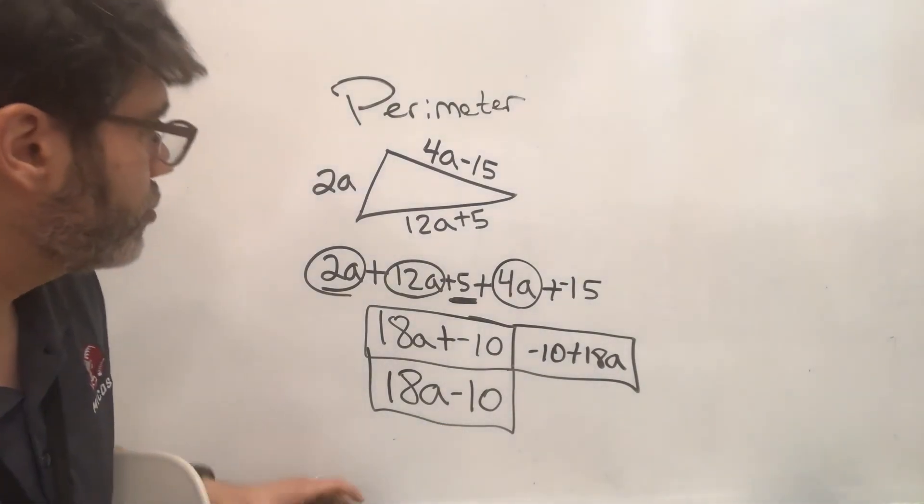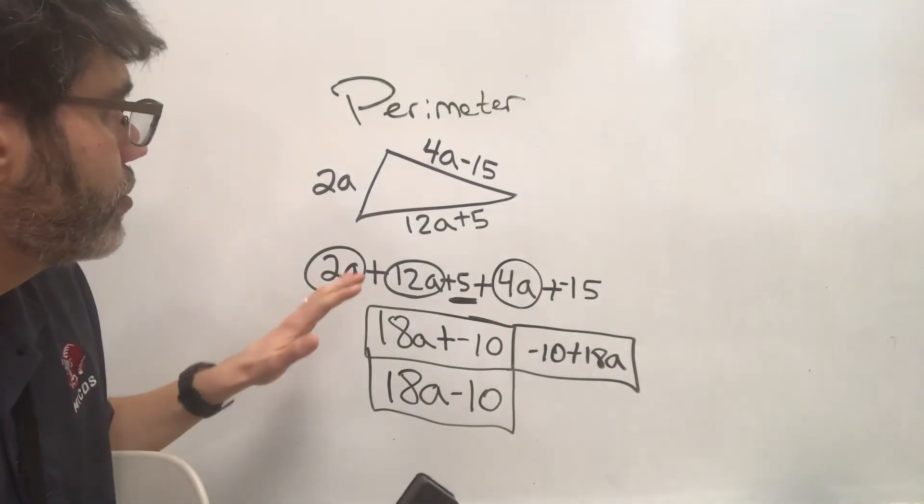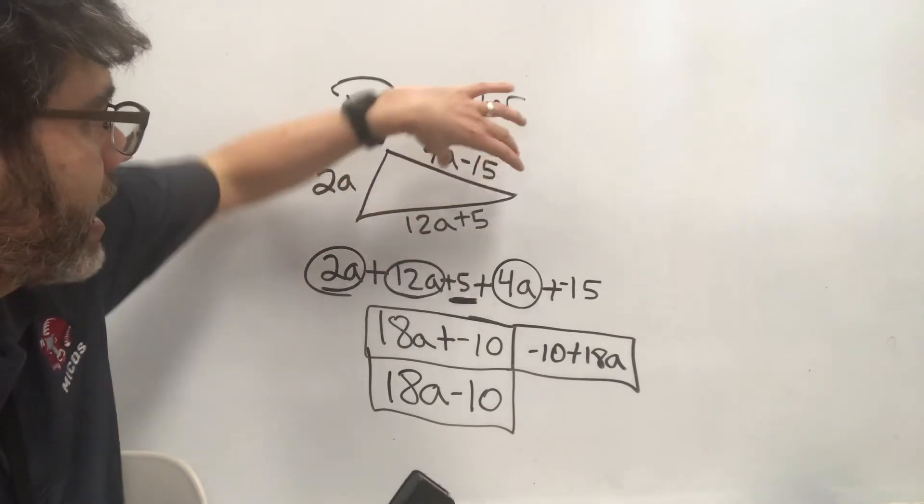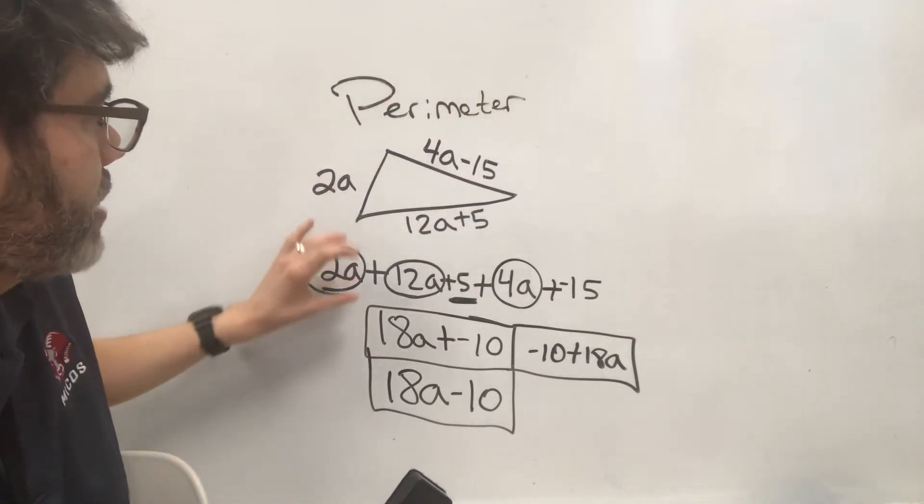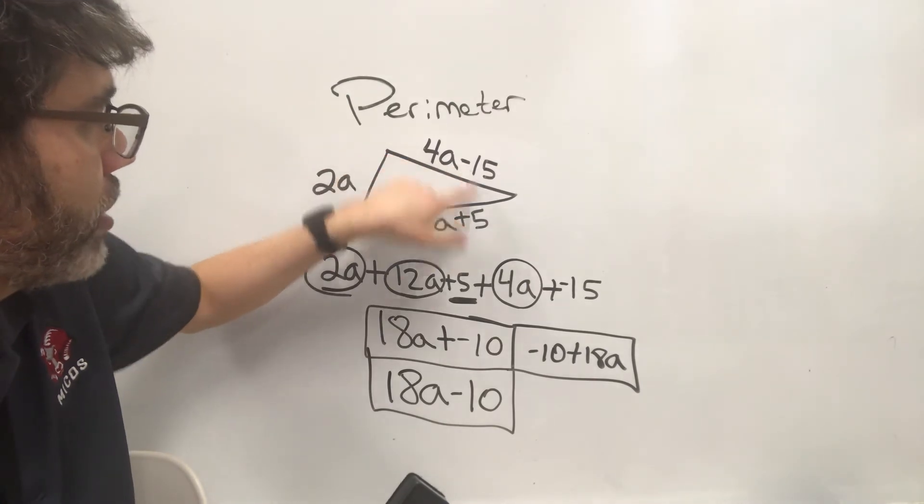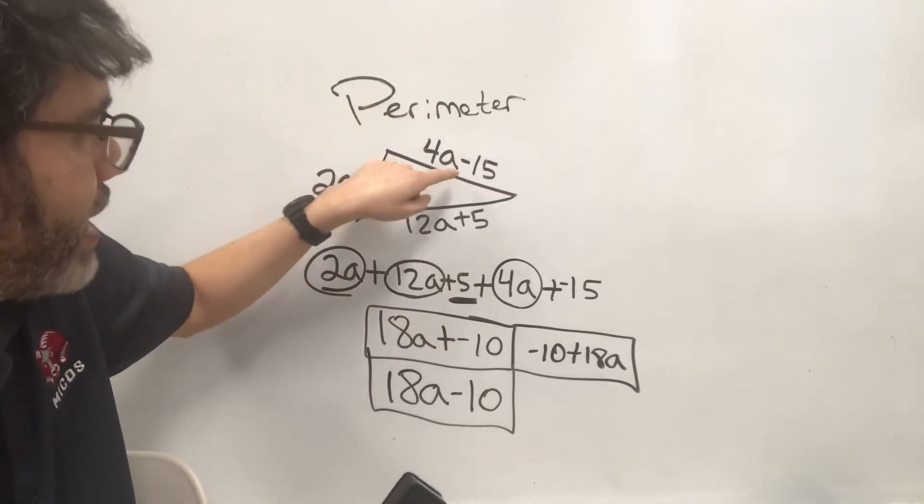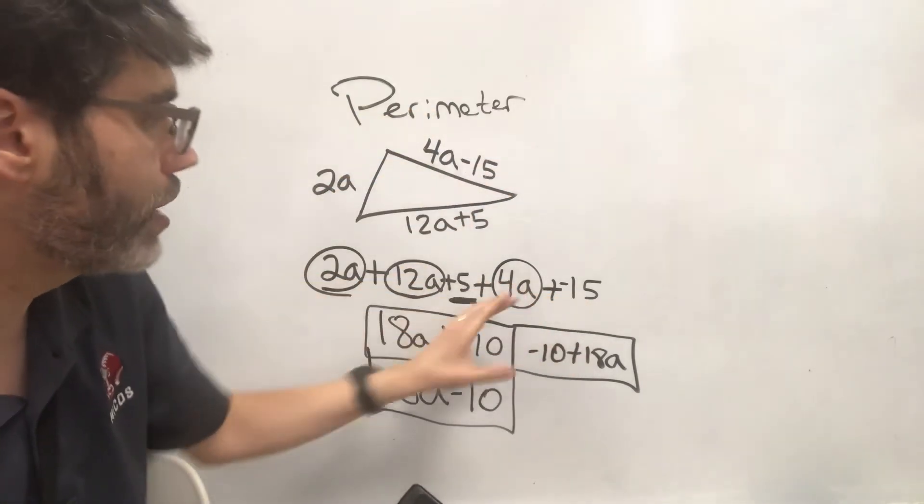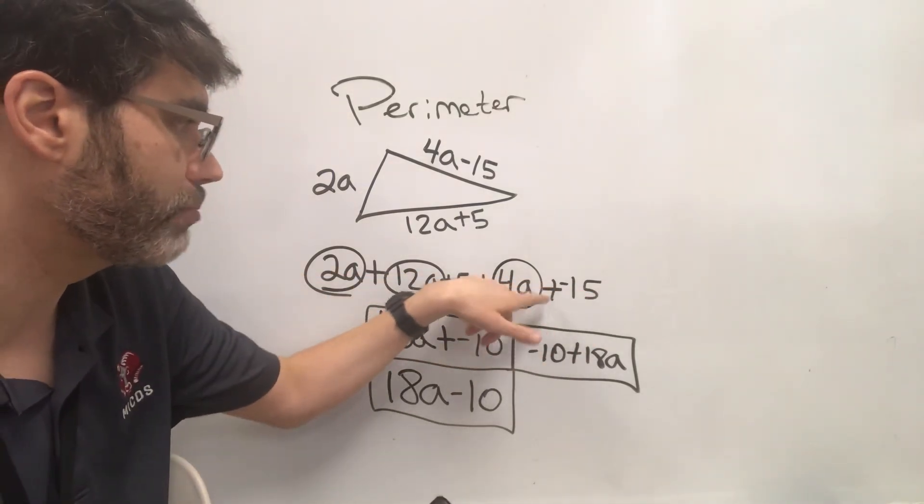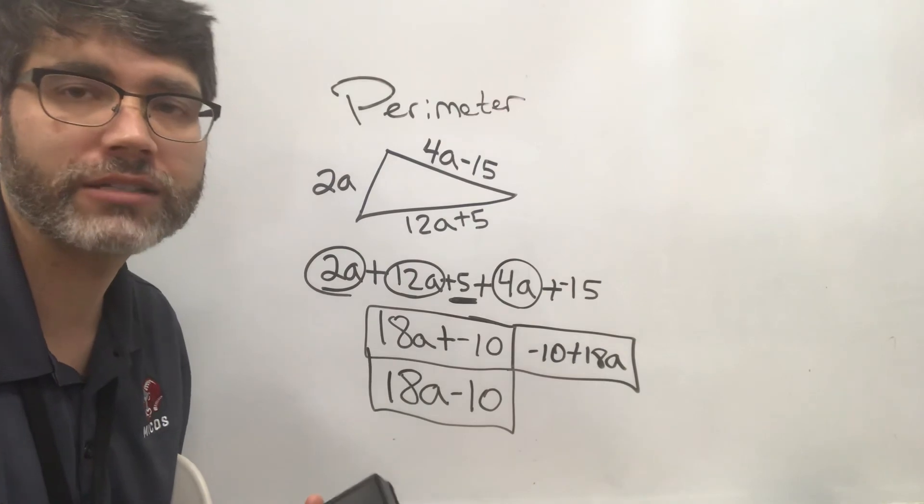So I want to give you a chance to do perimeters. Always remember that you're adding all of the sides. So you put this down and then add it to whatever this is. Even if there's a subtraction in here, just put plus 4a minus 15. And then if you want to, after you put it down, feel free to turn those subtraction signs into plus negatives. Okay, I'll give you some shots to do those.